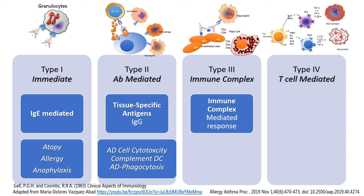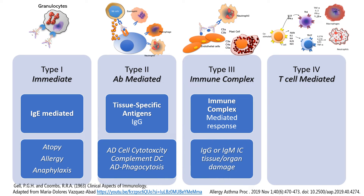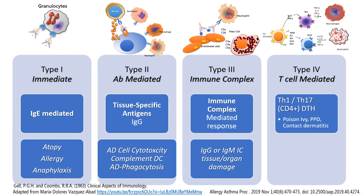Type 3 immune complex-mediated response can produce organ deposition of the immune complexes, which could be either IgG or IgM, and this can cause tissue or organ damage.